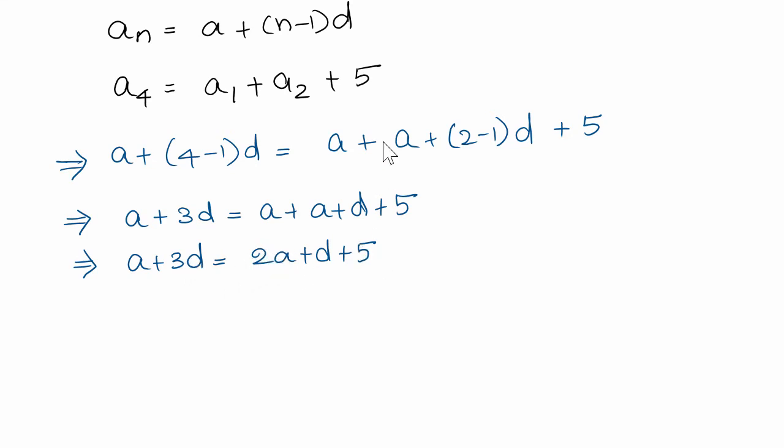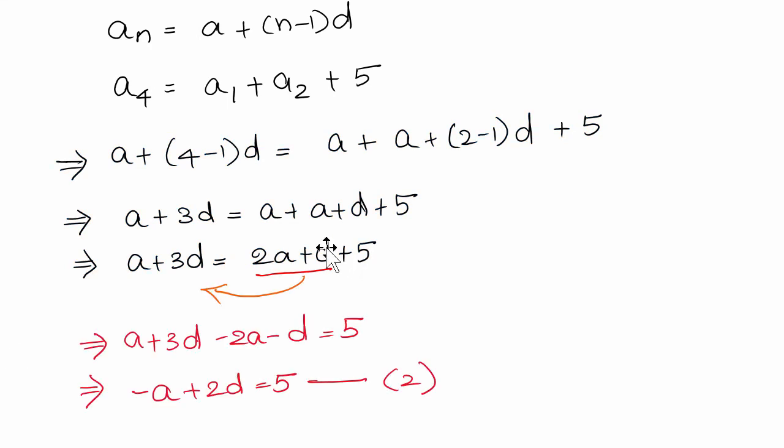Let us simplify it further. If I take 2a plus d to the other side, 2a becomes minus 2a, d becomes minus d. Whenever you take something from right hand side to left hand side, sign changes. a minus 2a is minus a, 3d minus d is 2d equals 5. Let us call this equation 2.